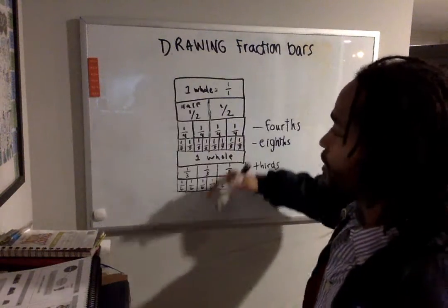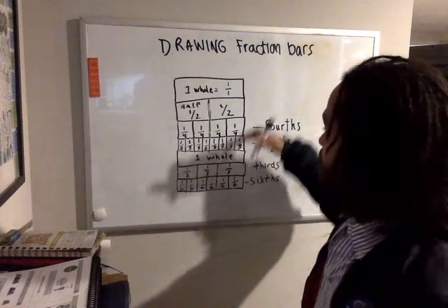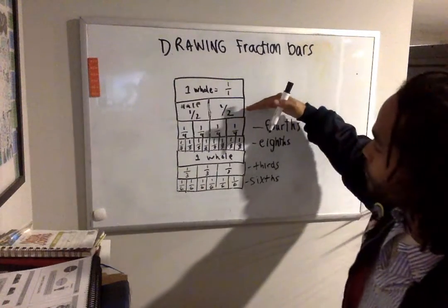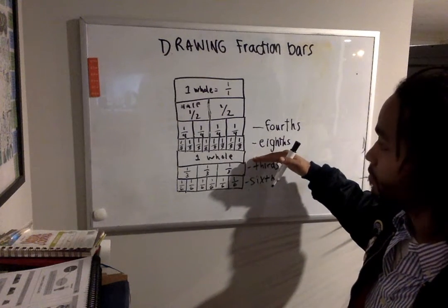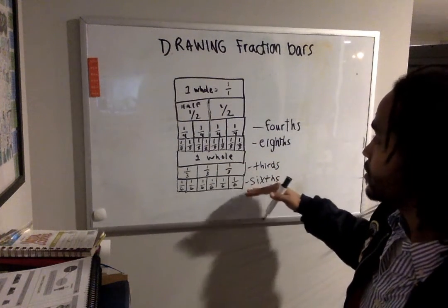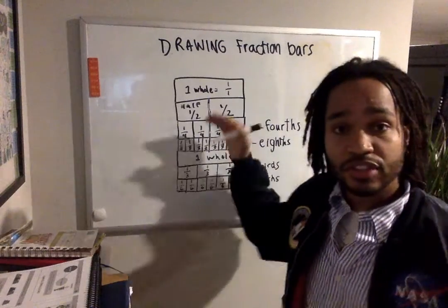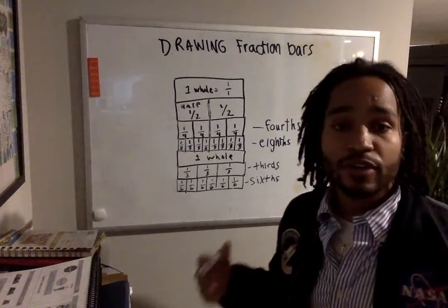So once you've been able to create fraction bars like this, one whole, halves, fourths, eighths, going to a whole again, thirds, sixths. This is good to practice as I said before. We're gonna show it on a number line.